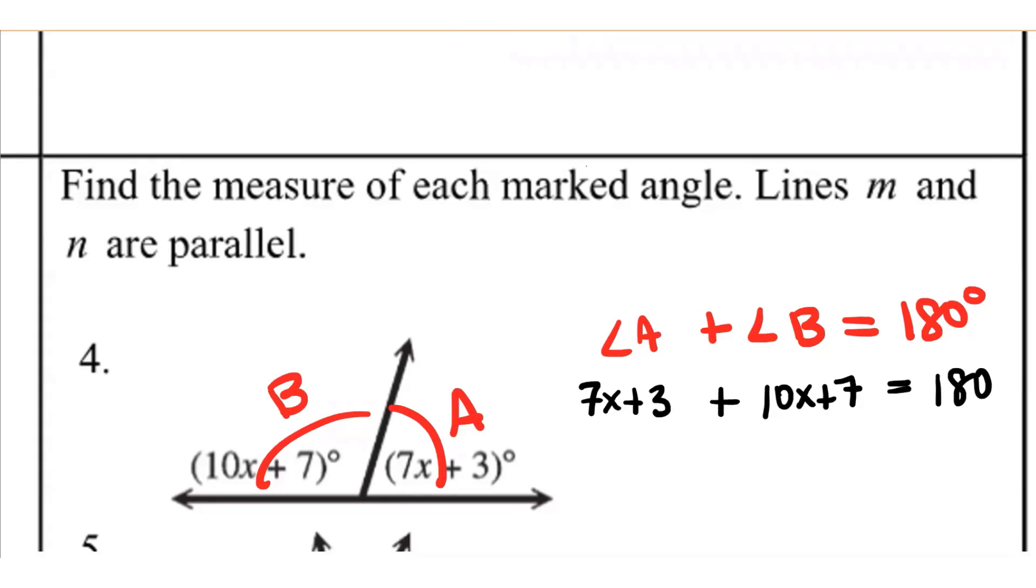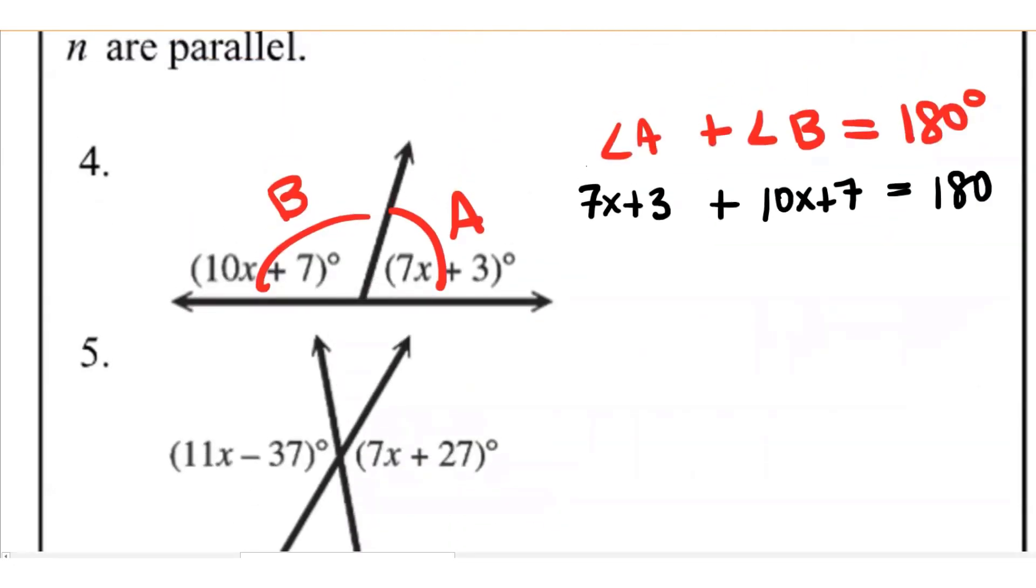So those of you who might remember, what would you do first to solve this equation? Combine like terms. And yes, you're both really saying the same thing. Put the terms that have variables together, right? So 7x plus 10x is 17x. 3 and 7 is 10. So we have 17x plus 10 equals 180. Okay. So we have done what's called combining like terms. There are no more like terms, which means terms that have the same variables in them. So now what?